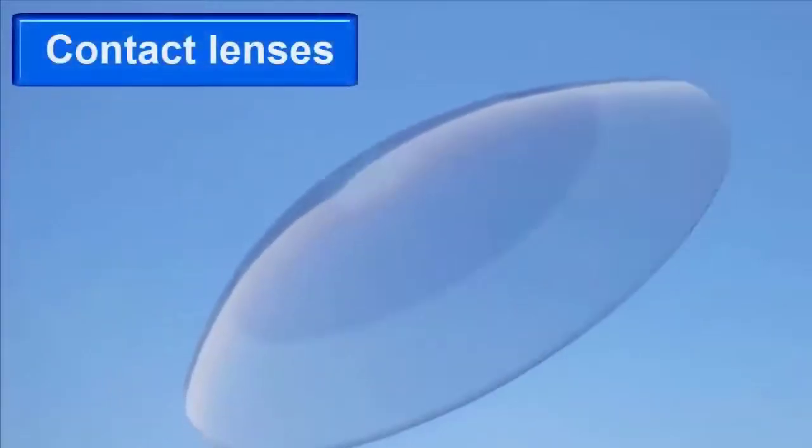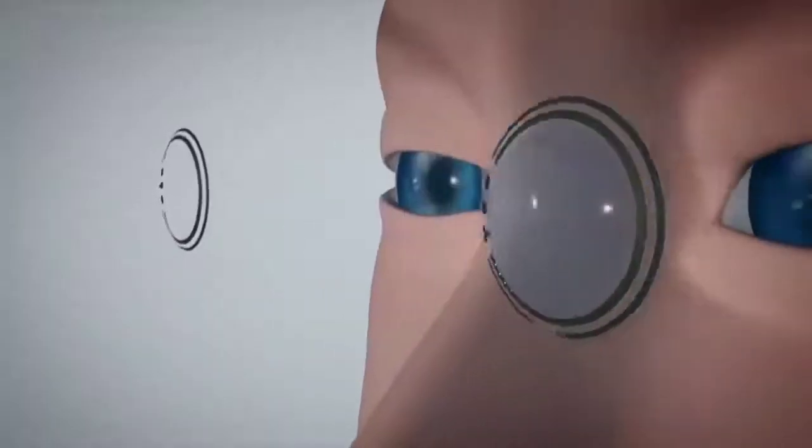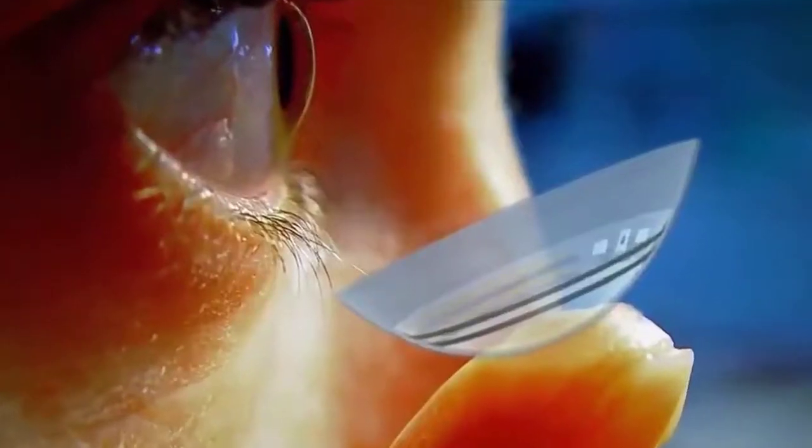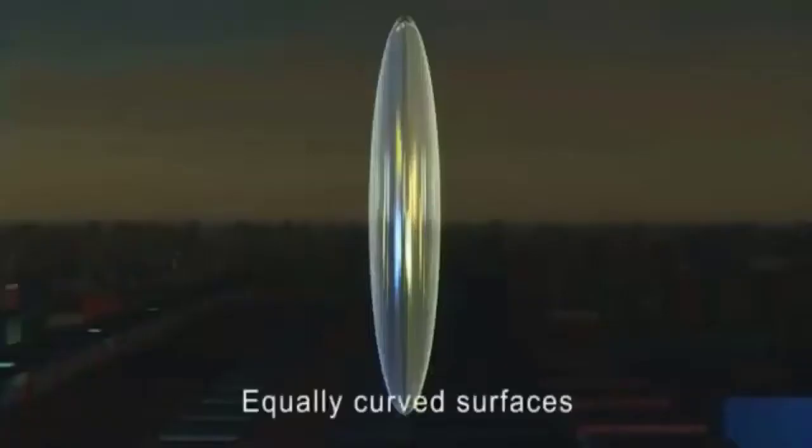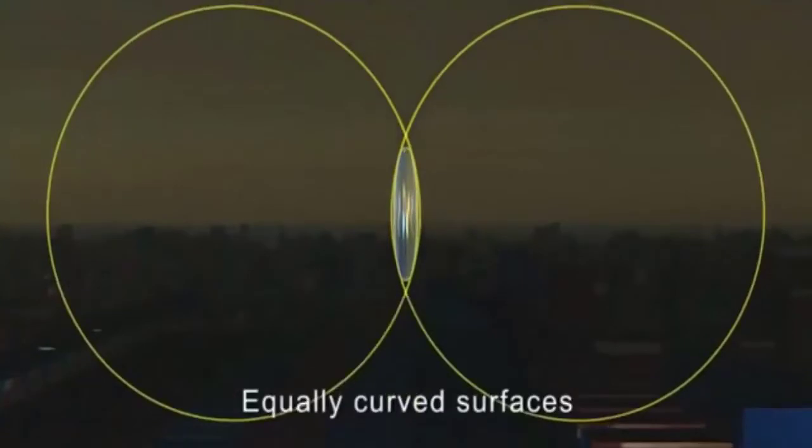A lens is a part of glass or plastic whose one or both sides are curved. Every side of a lens is a part of a sphere. The center is called the center of curvature (C).